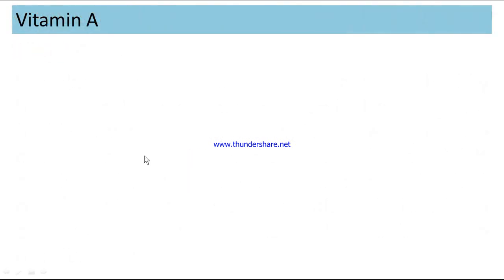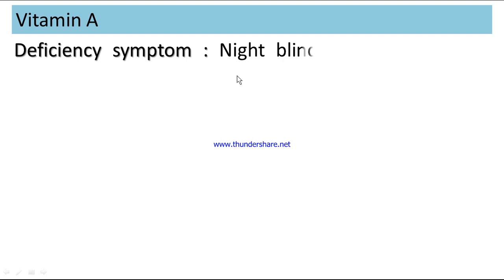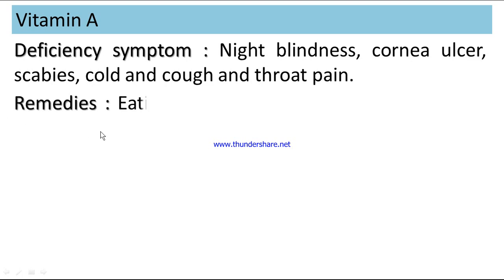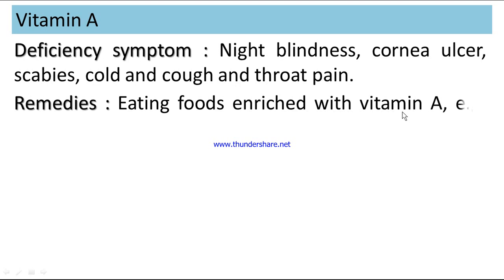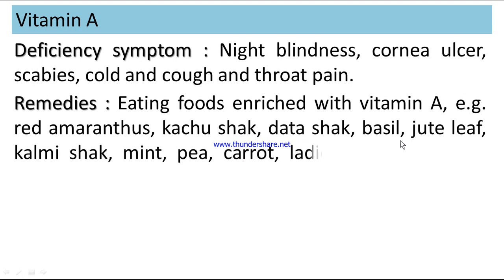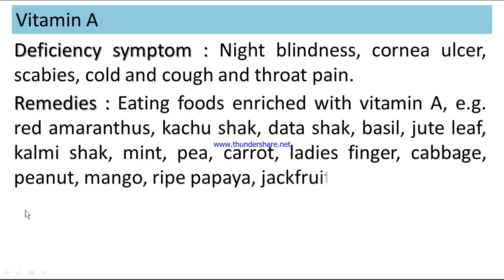Vitamin A: Deficiency symptoms include night blindness, cornea ulcer, scab, cold and cough, and throat pain. Remedies: eating foods enriched with Vitamin A, such as red amaranthus, kochushak, datashak, basil, jute leaf, kolmishak, mint, pea, carrot, lady's finger, cabbage, peanut, mango, ripe papaya, jackfruit, etc.